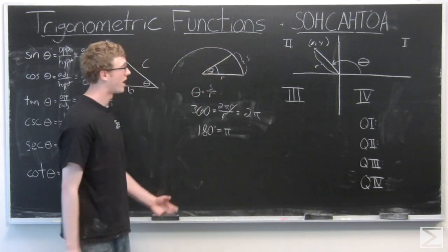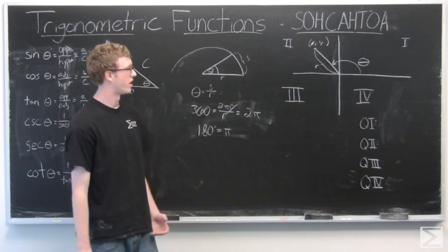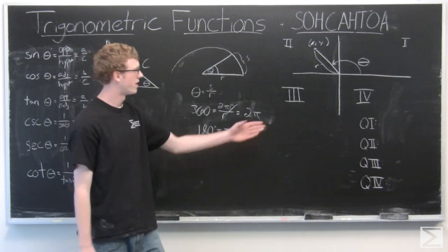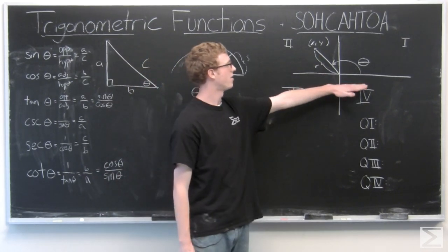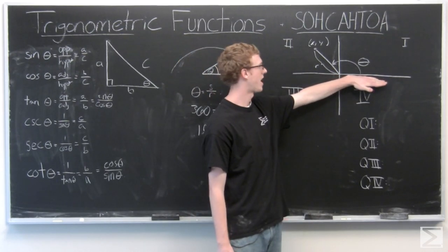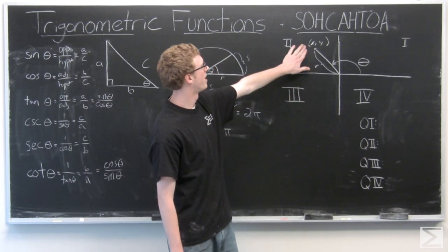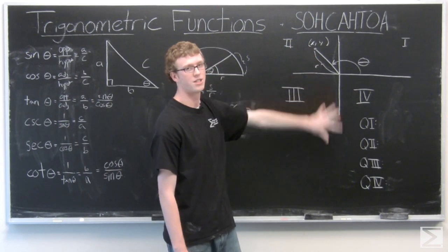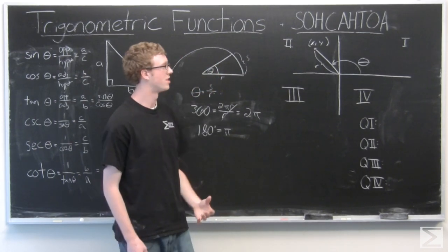So now we're going to go ahead and we did some right triangle trig, now we're looking for a little more general case. So we have a coordinate axis over here with quadrants labeled one through four. We have our angle theta, which, again, is measured from the positive x axis over. And we have a point x, y, and a distance from the origin r. So we're going to look to define the trig functions here.